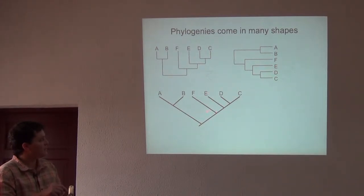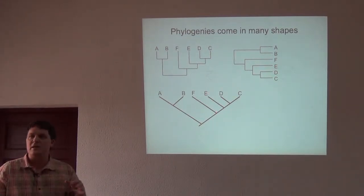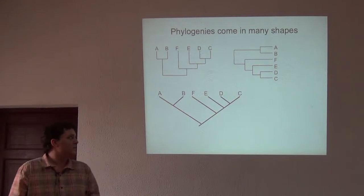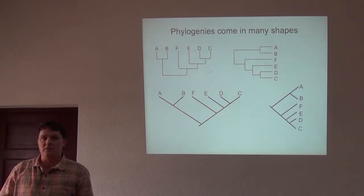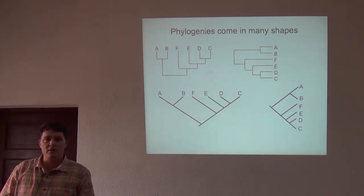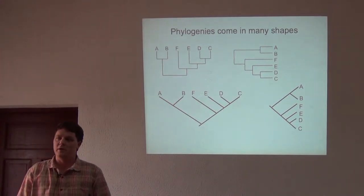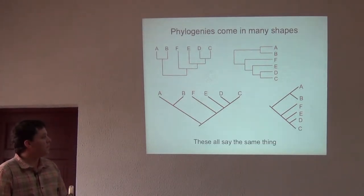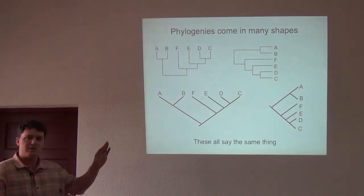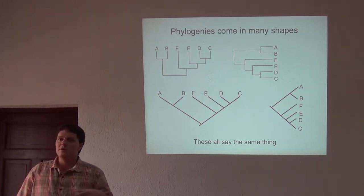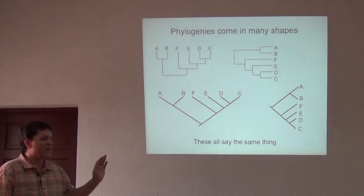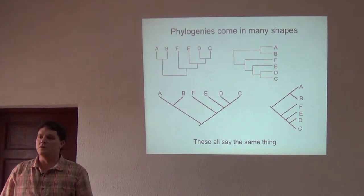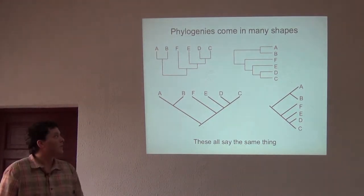The next group is F right there. They say the same thing — they just look different. Here's another one. This one's a little different, right? No, it's the same thing — it's exactly the same. You want to pay attention to the branching order. Starting at the tips and working your way back into the tree, you'll arrive at the conclusion that those are definitely the same thing.